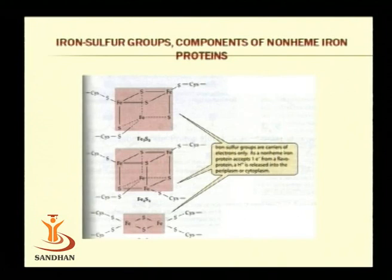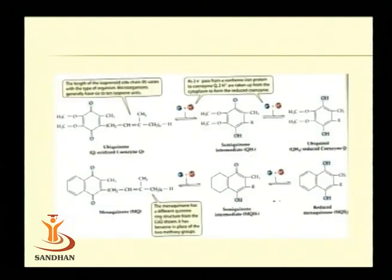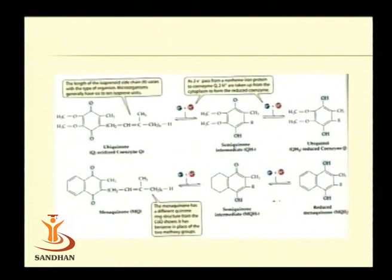The 2Fe-2S type is most commonly found in bacteria and is commonly known as ferredoxin; it accepts only one electron. The next carrier is coenzyme Q — that is ubiquinone and menaquinone. Menaquinone has one additional benzene ring with methoxy groups replacing some substituents compared to ubiquinone, but the active site remains the same.